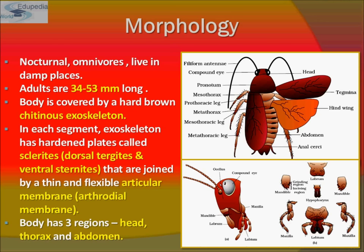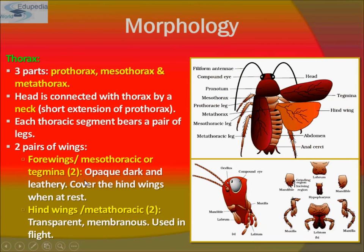The body has three regions: head, thorax, and abdomen. Now comes thorax: it has three parts — prothorax, mesothorax, and metathorax.